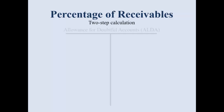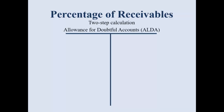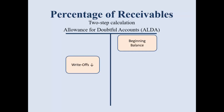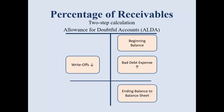This is a two-step calculation. The allowance for doubtful accounts is a contra asset and a permanent account. You will have a beginning balance as a credit; write-offs will decrease it; when you record bad debt expense, that increases your allowance account; and your ending balance goes to the balance sheet. So two steps: first you determine the ending balance, then you back into what bad debt expense is.